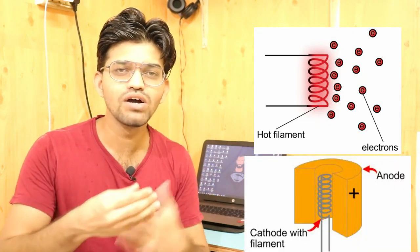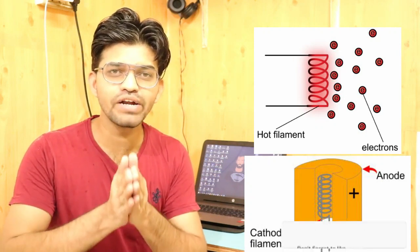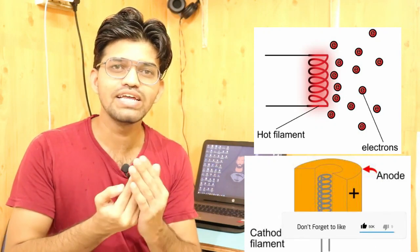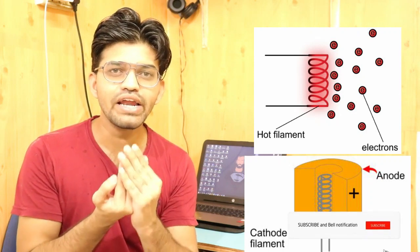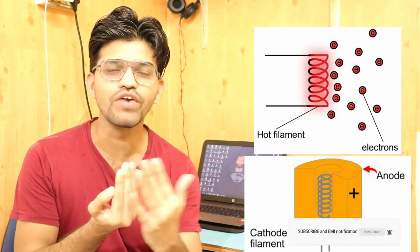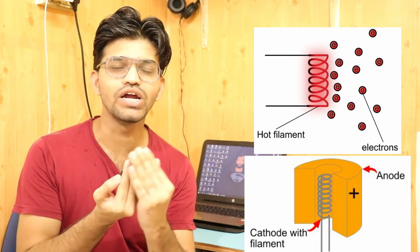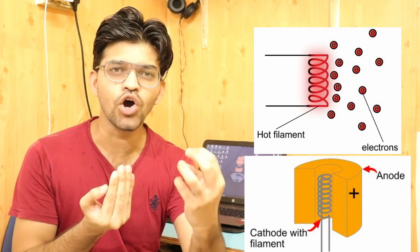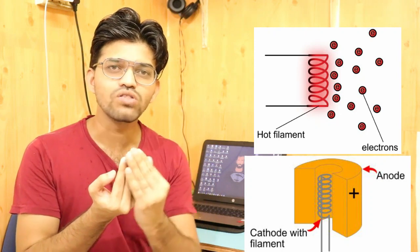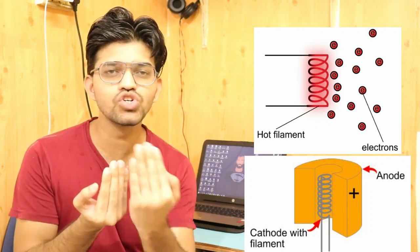Suppose we place an anode nearby to that particular cathode filament. In that case, the electrons thrown away from the cathode will move towards the anode. While the electrons move through that vacuum space, this particular movement produces radio waves.